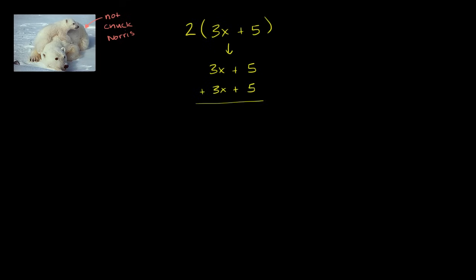Well, this is the same thing as, if we just look at it right over here, we have now 2 3x's. So we could write it as 2 times 3x plus we have 2 5s. Plus we have 2 5s, so plus 2 times 5.